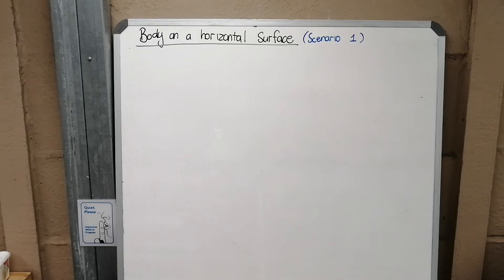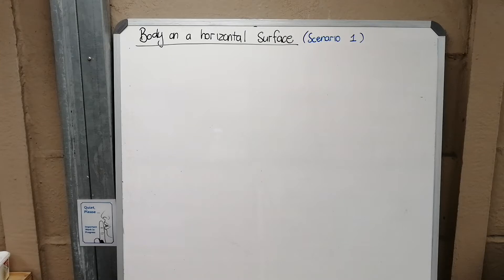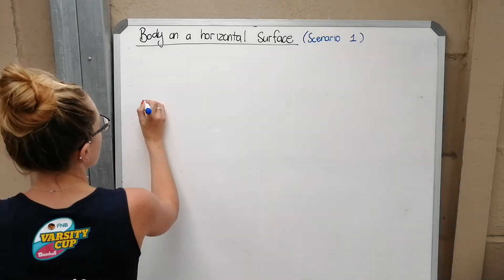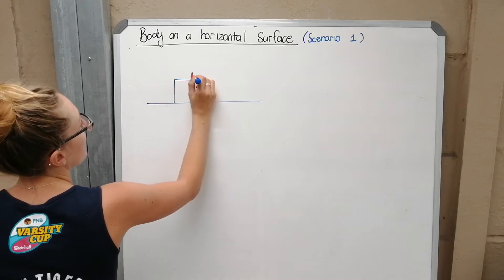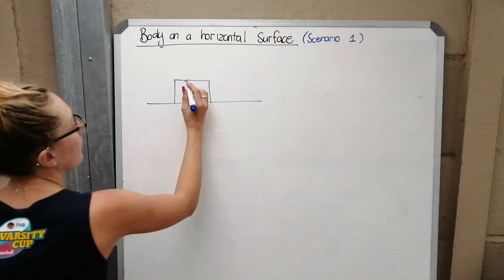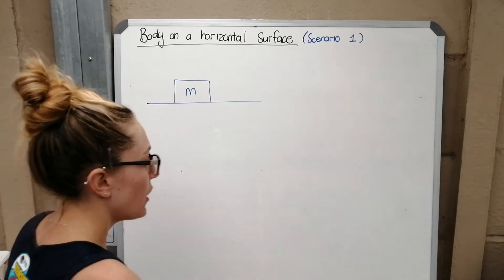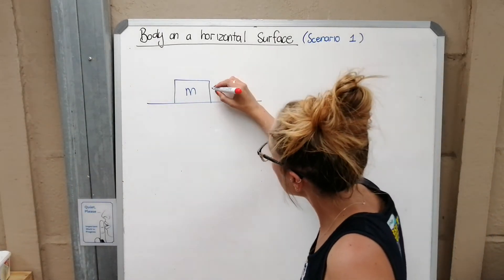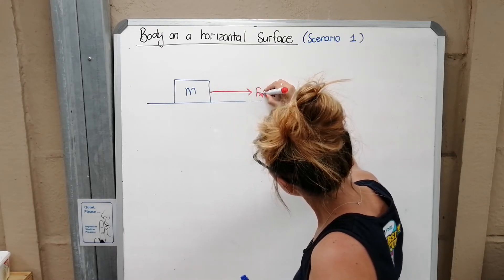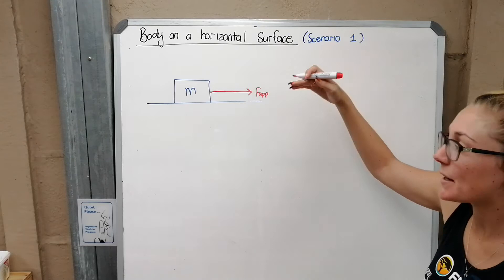In applying Newton's laws and doing force calculations, there are pretty much three scenarios you can run into. They might not be isolated — you could have one scenario and then in the next question they could change it. The first scenario is where you have a body on a horizontal surface with a specific mass m experiencing an applied force. For scenario one, we're only talking about applied forces that are horizontal, parallel to the surface.